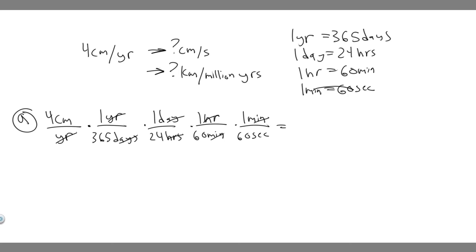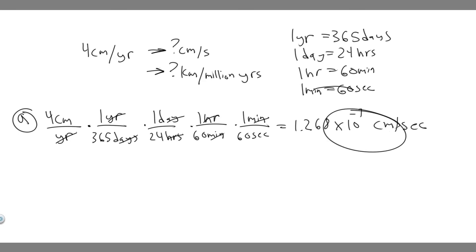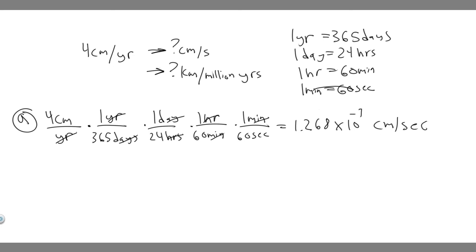Now we just compute: four divided by 365, then divide by 24, then divide by 60, then divide by 60 again. What you get is 1.268 times 10 to the minus seven centimeters per second. This is your answer to Part A — the tectonic plate moves this distance every single second.